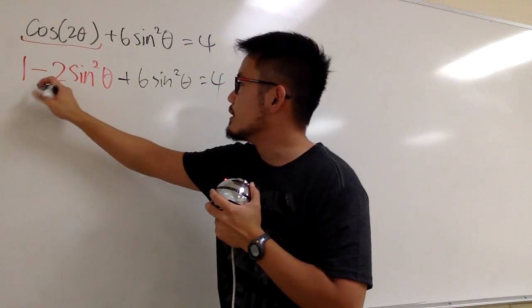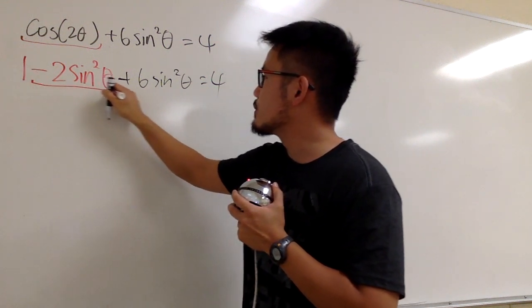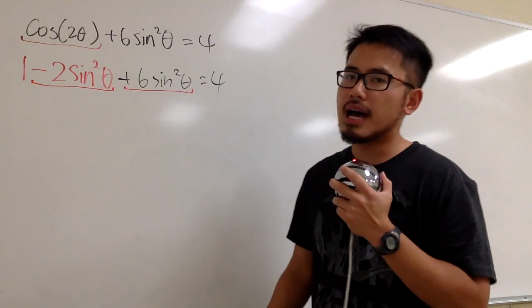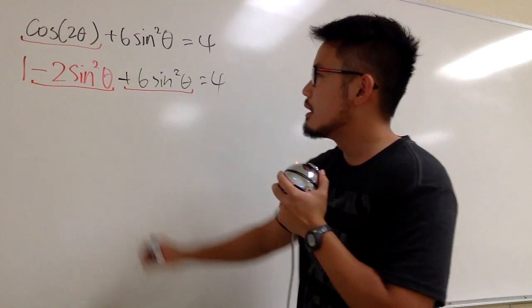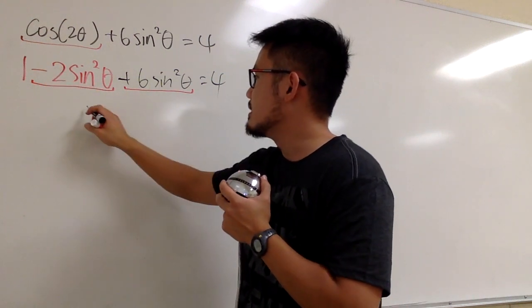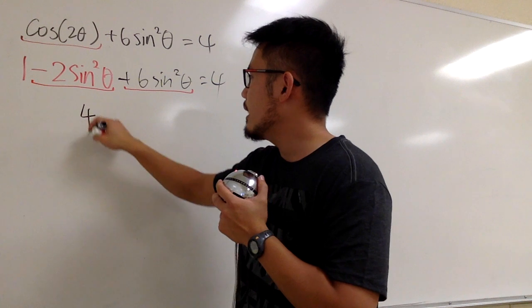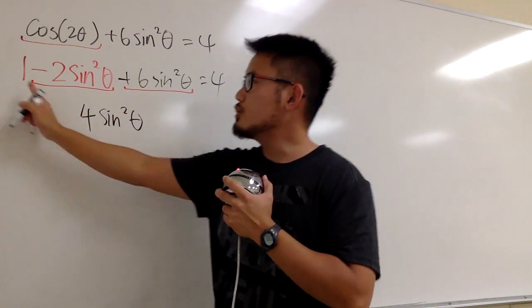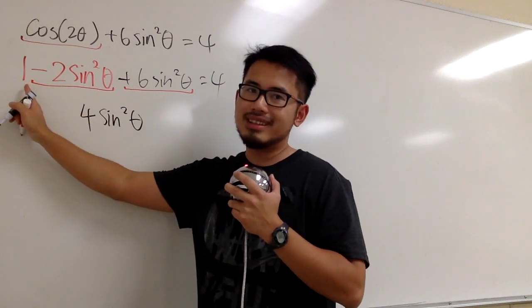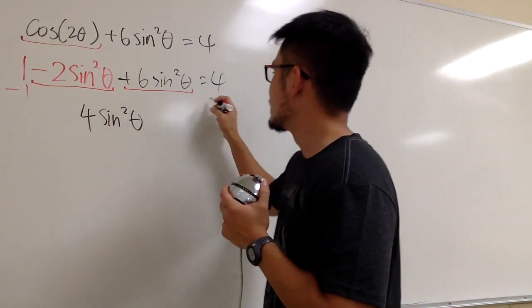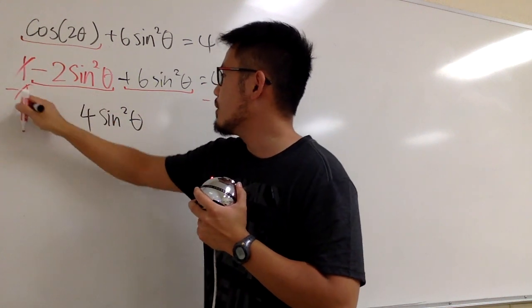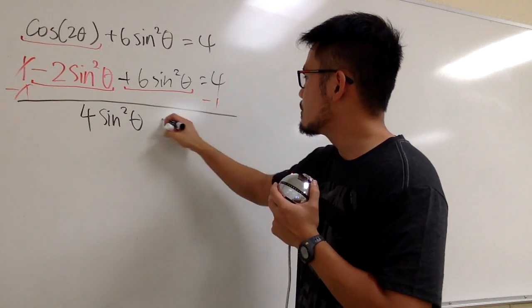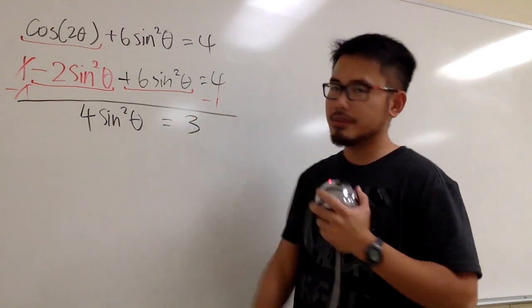We see that we have negative 2 sine squared theta plus 6 sine squared theta. We can combine those terms: negative 2 plus 6 is 4, so we have 4 sine squared theta. What should we do with this 1? We just subtract 1 from both sides, and we get 4 sine squared theta equals 4 minus 1, which is 3.